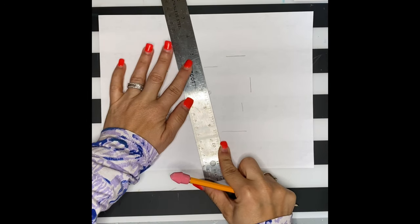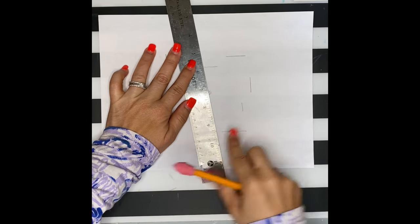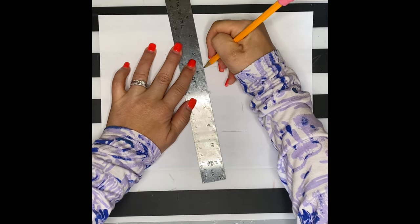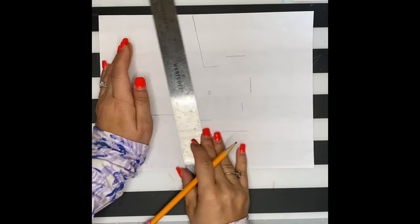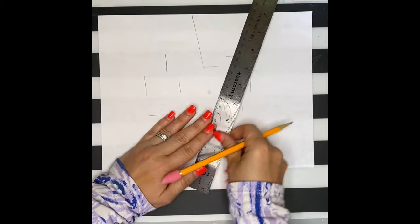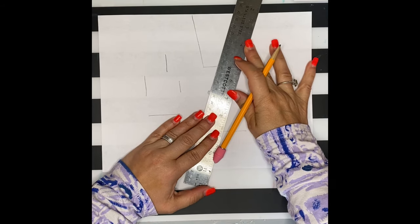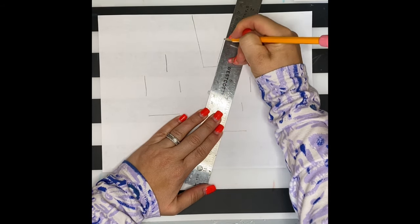If you don't understand this step, it's also on your directions, and I suggest rewinding this to see how I'm doing it. I'm just using my ruler as a guideline. If you don't have a ruler, you can use a straight edge of a box or something else at home.